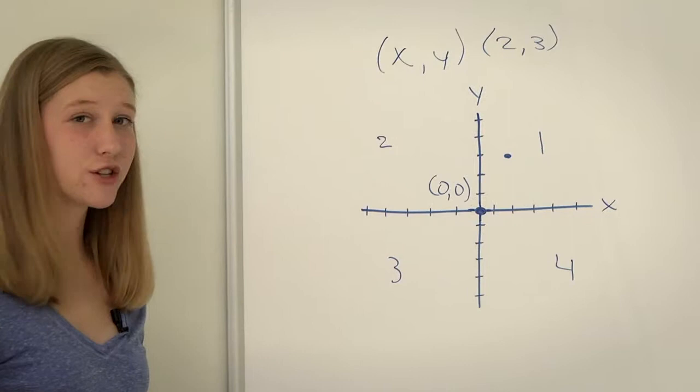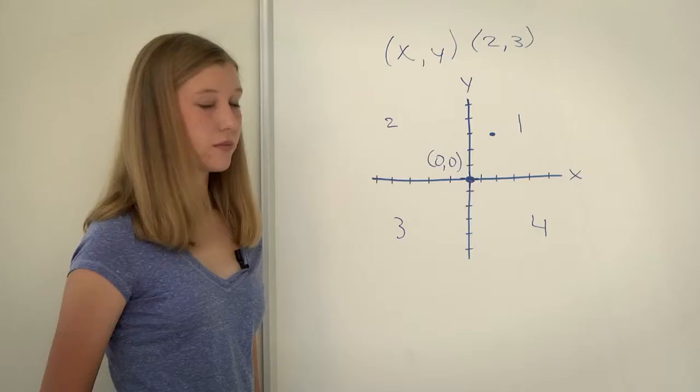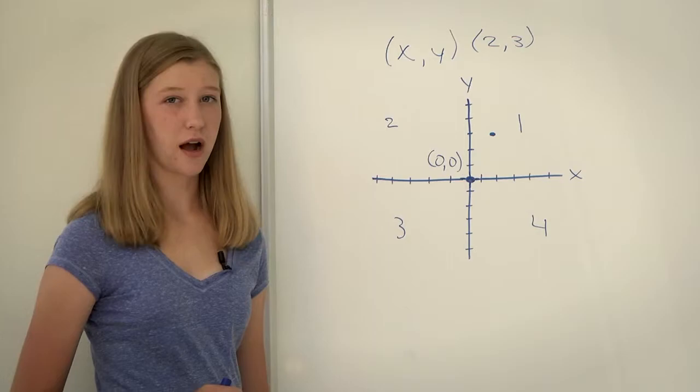Every line has intercepts. An intercept is where the line crosses one of the axes. It can be either crossing the y-axis or crossing the x-axis.